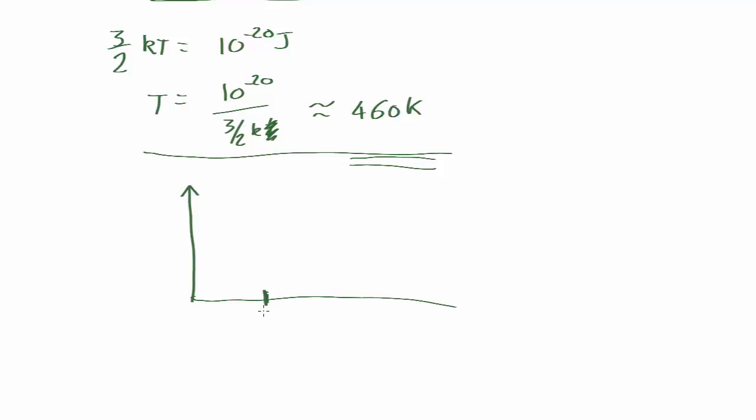Let's say this is the average energy and this is the number of molecules. You can plot a histogram and you'll find that at any given time, some molecules have less energy and some have more than the average. This distribution can be calculated - it's called the Maxwell-Boltzmann distribution.